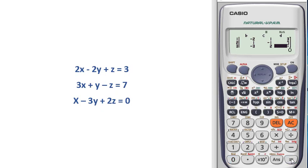After putting all the variables and constants, you have to press equal to get the result. Here x equal to 2, y equal to 0, and z equal to minus 1.